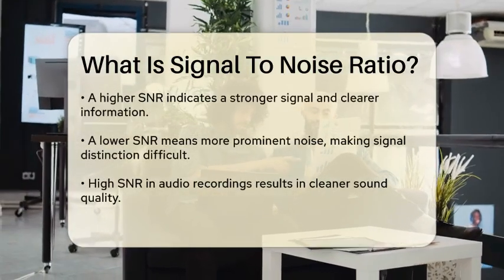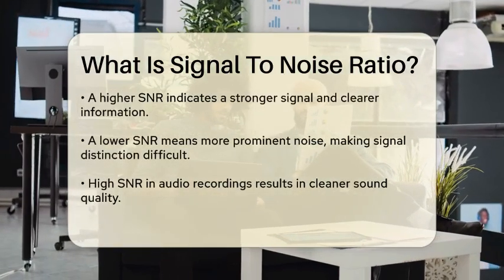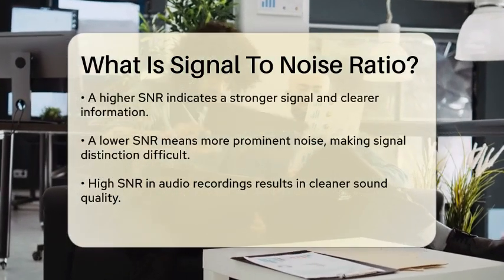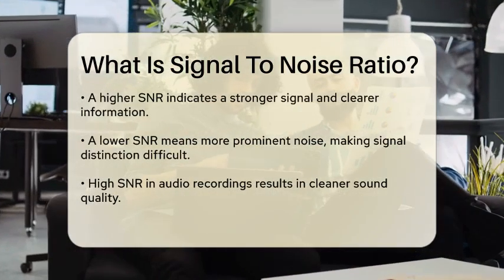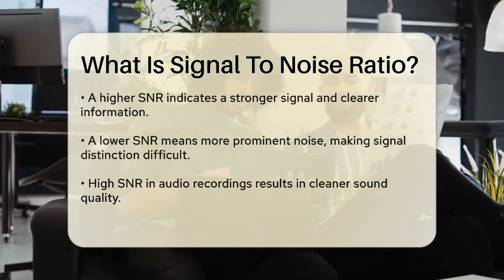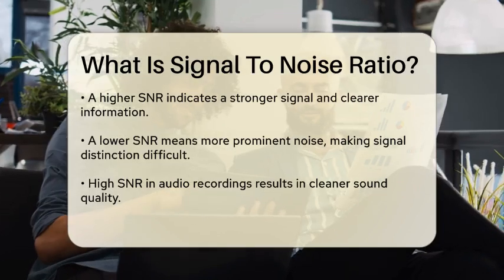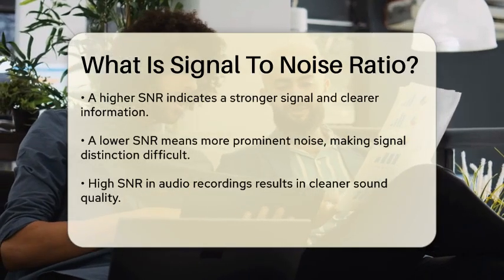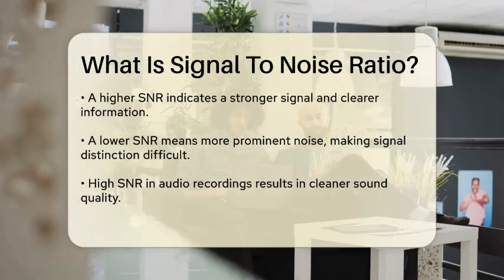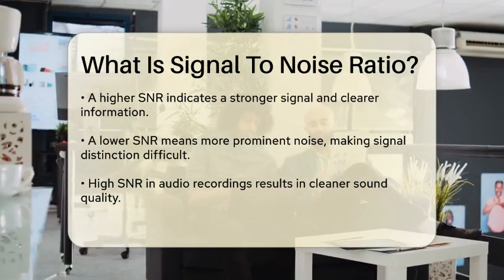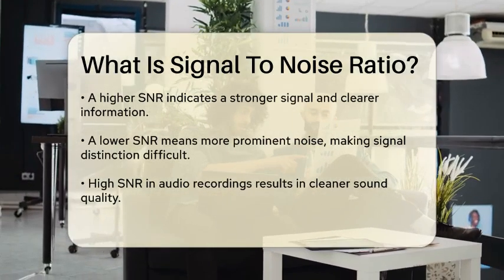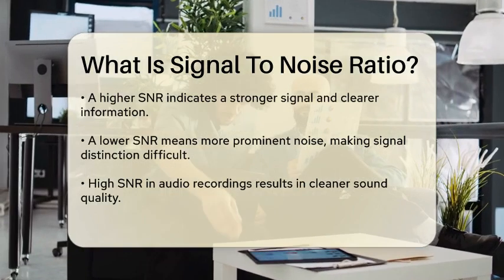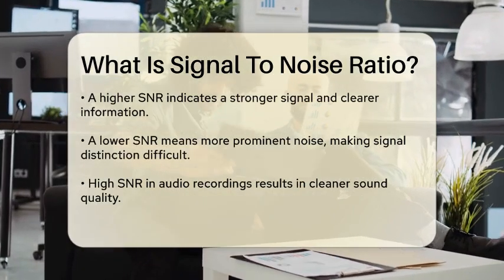In simpler terms, it quantifies how much useful information is present in a signal versus how much unwanted noise is interfering with that signal. A higher signal-to-noise ratio indicates that the signal is much stronger than the noise, which typically results in clearer and more accurate information being transmitted or recorded.